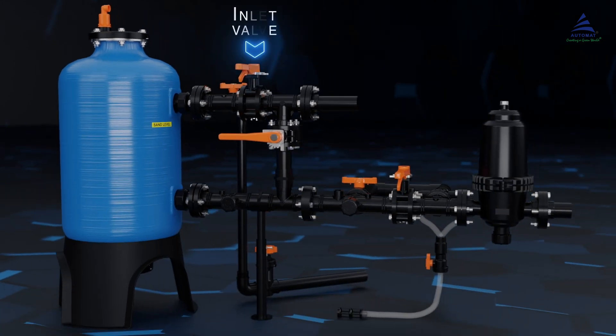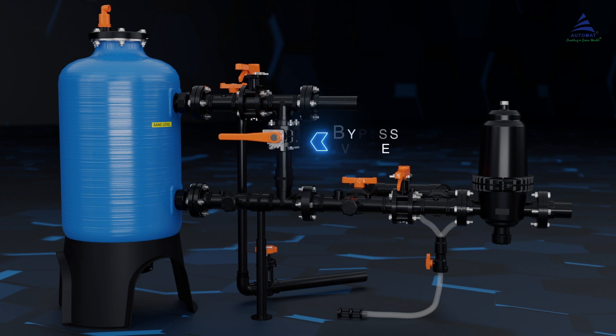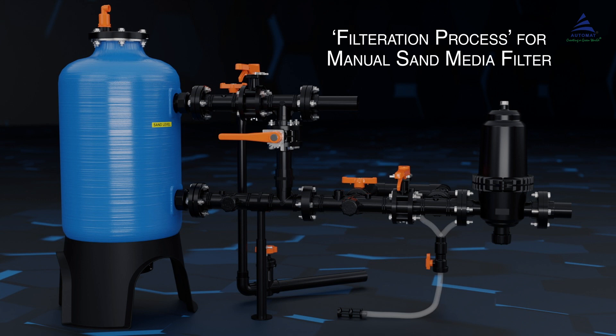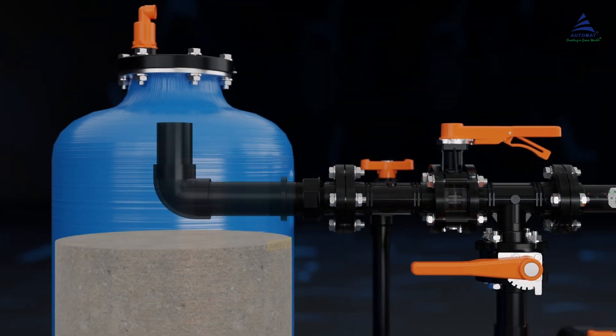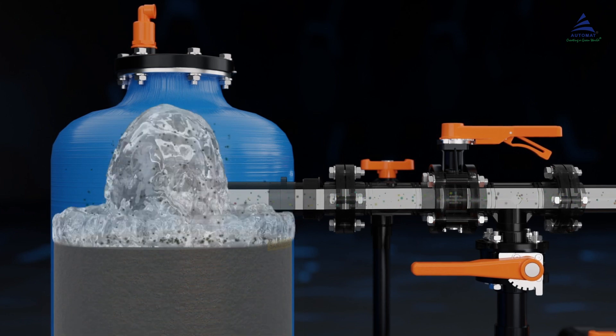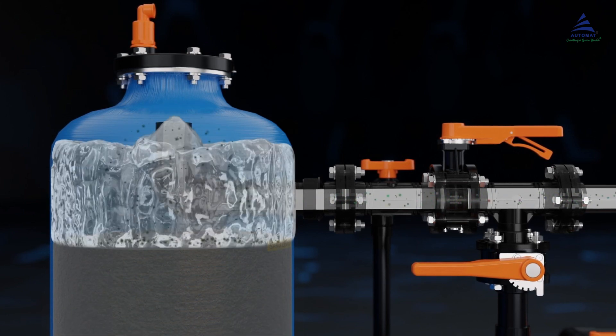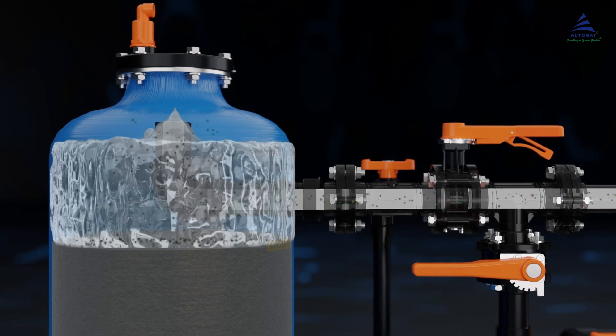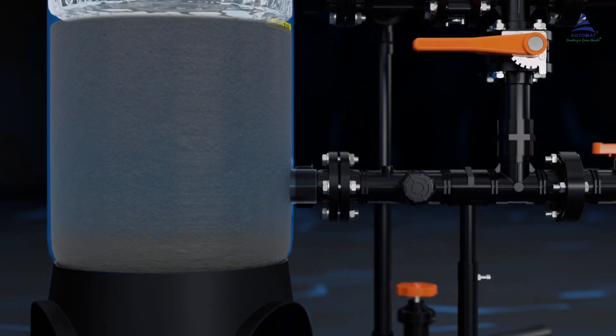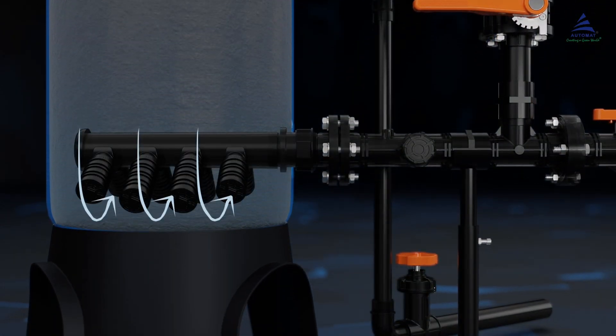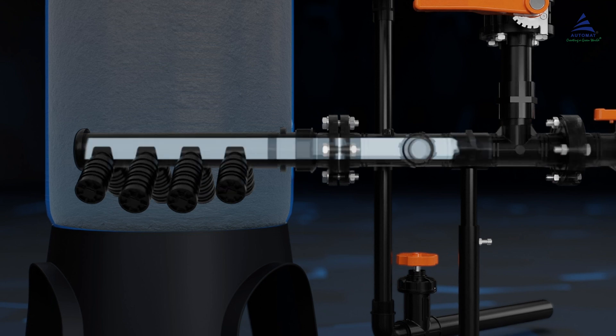Let us understand how it works. The filtering process initiates when the inlet and outlet valves are open and that allows water to enter the main tank through the inlet. Once the impurities settle on the surface of the sand, clean water flows downwards and enters the flutes at the bottom of the tank and flows out of the outlet. This completes the filtration process.